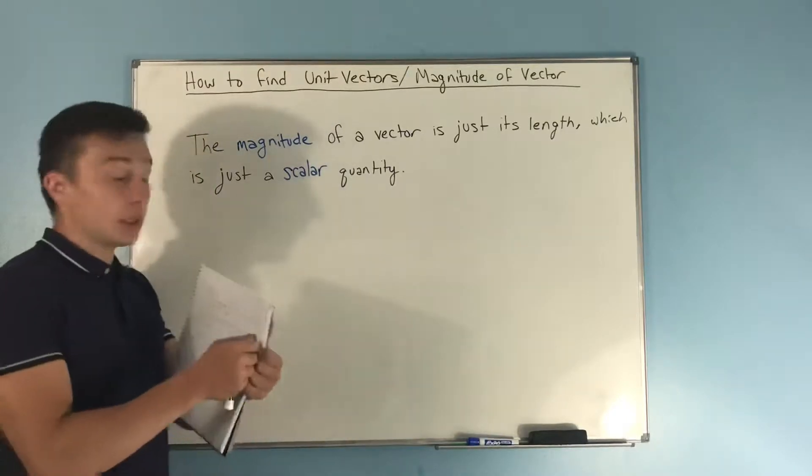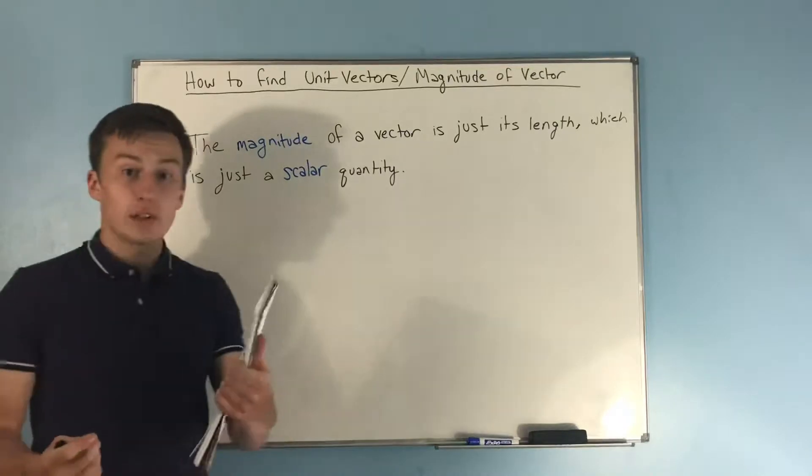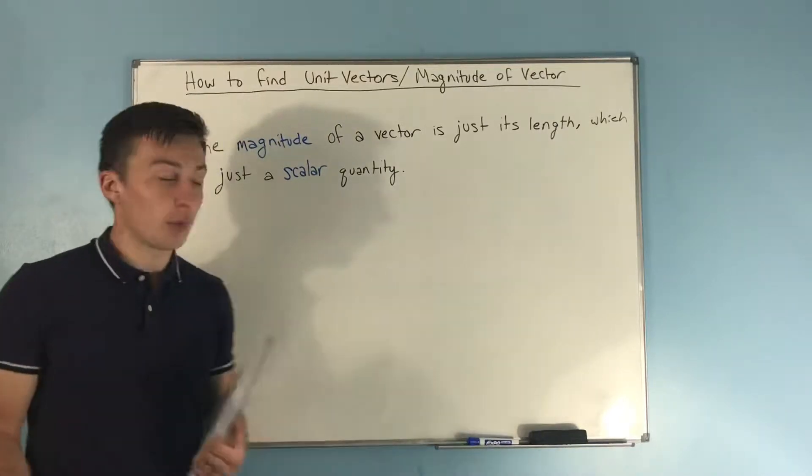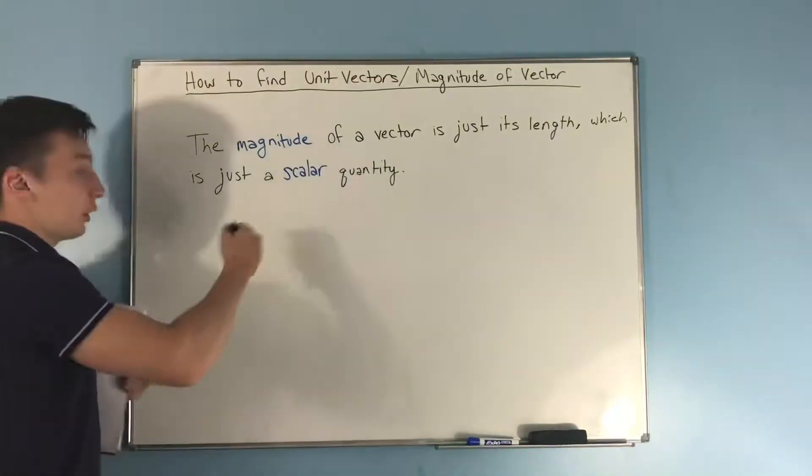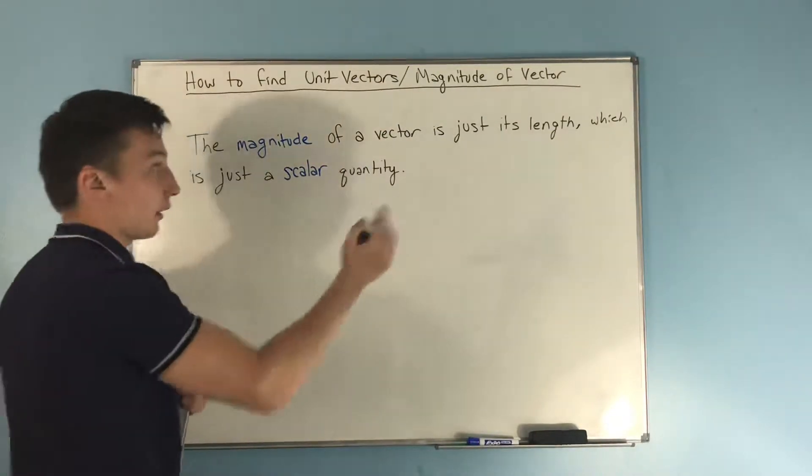Well now we're going to be stripping this apart into magnitude, and then with unit vectors we're just going to talk about solely direction. So here we're stripping a vector apart and only talking about the magnitude, so only talking about the length of a vector.